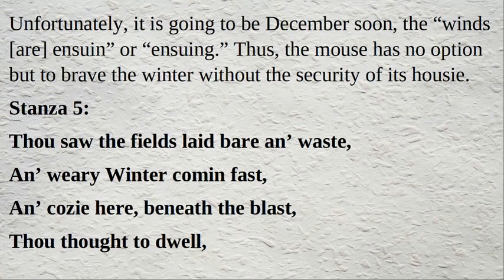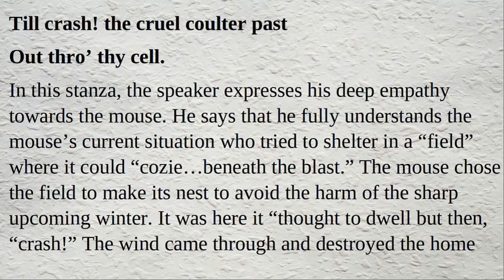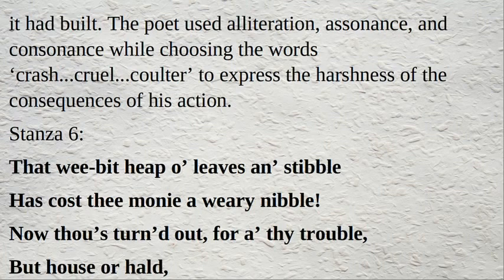In this stanza, the speaker expresses his deep empathy towards the mouse. He says he fully understands the mouse's current situation — it tried to shelter in a field where it could cozy beneath the blast. The mouse chose the field to make its nest to avoid the harm of the sharp upcoming winter. It was here it thought to dwell, but then crash — the wind came through and destroyed the home it had built. The poet used alliteration, assonance, and consonance while choosing the words 'crash,' 'cruel,' and 'counter' to express the harshness of the consequences of his action.